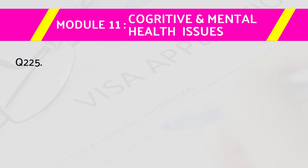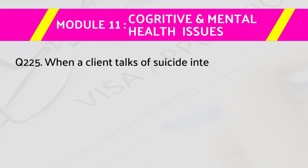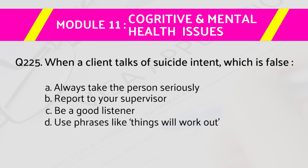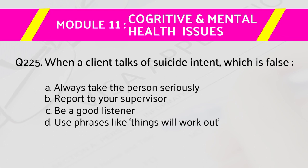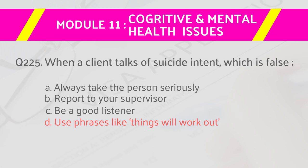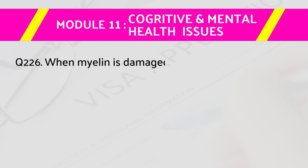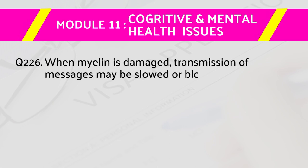Question number 225: When a client talks of suicide intent, which statement is false? Answers are: a) always take the person seriously, b) report to your supervisor, c) be a good listener, d) use phrases like 'things will work out.' The right answer is d) use phrases like 'things will work out.'